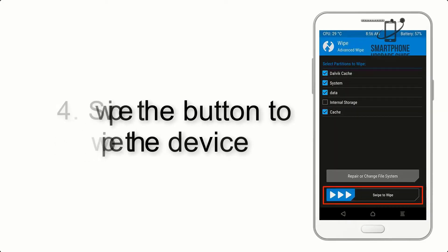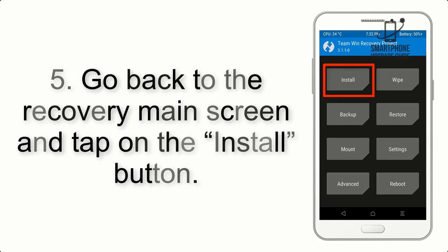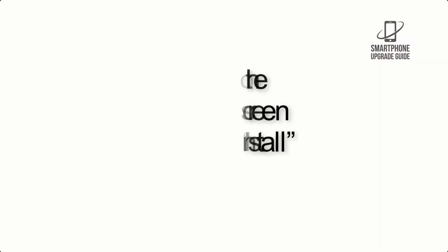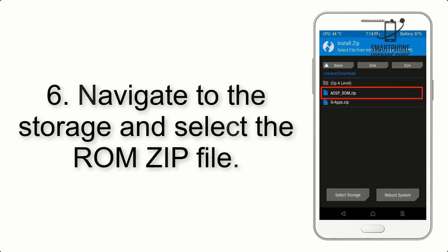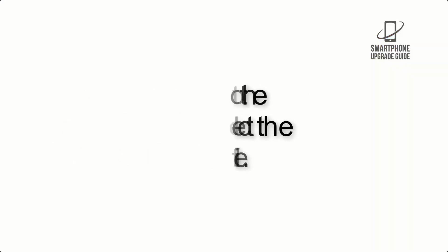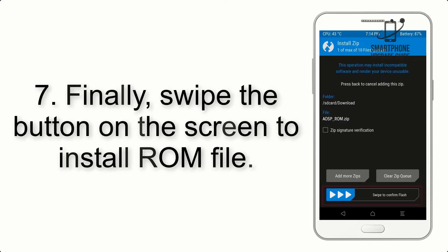Step 4: swipe the button to wipe the device. Step 5: go back to the recovery main screen and tap on the Install button. Step 6: navigate to the storage and select the ROM zip file.